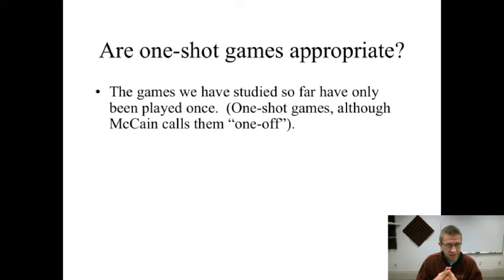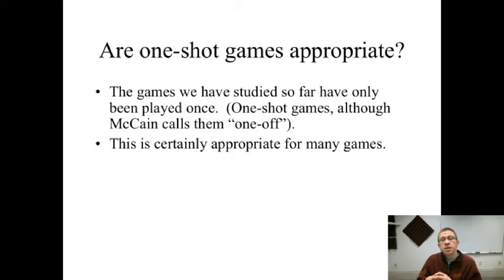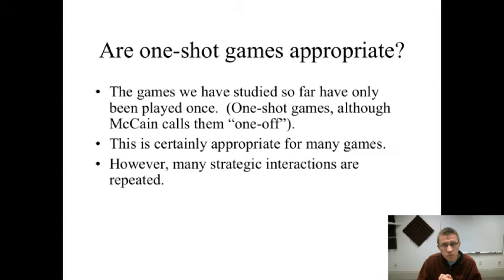We actually have two lessons on this. This one covers finitely repeated games — games that are repeated a finite or definite amount of times. This lesson is actually much shorter than the next one, which covers indefinitely repeated games — games that are infinitely or at least indefinitely repeated. They may not go on forever, but there is no known end point with certainty. One-off games are not always appropriate; sometimes a game happens once and only once, but it's not always appropriate.